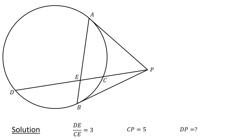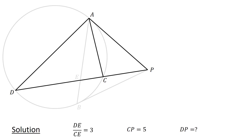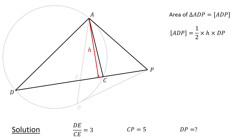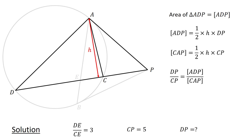And now for the solution. First, connect A to D and connect A to C, and then consider triangles ADP and CAP. Let's denote the area of triangle ADP as follows. If H is the height of the two triangles, then area of ADP equals half times H times DP, and area of CAP equals half times H times CP. Therefore, we have DP over CP equals area of ADP over area of CAP.